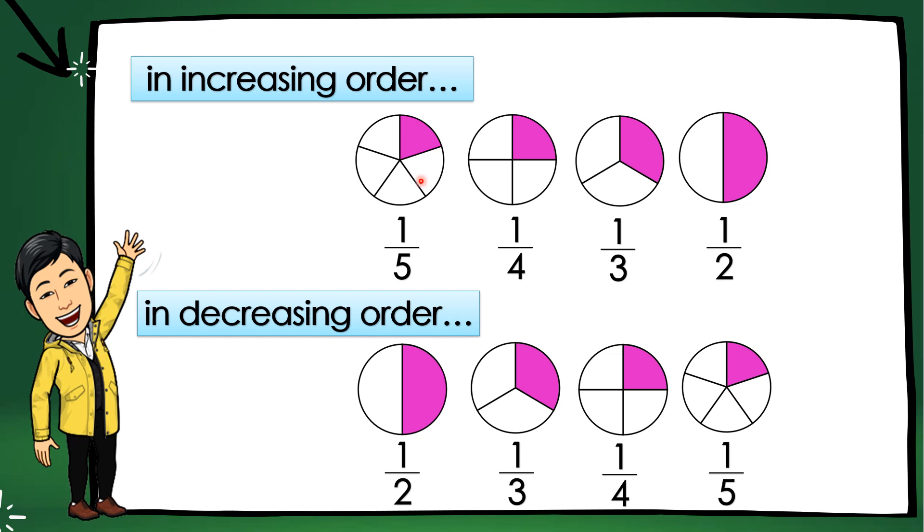we have 1/5, 1/4, 1/3, and then 1/2. For decreasing order, 1/2, 1/3, 1/4, and 1/5.